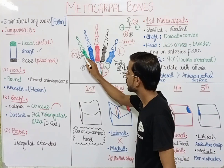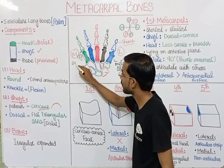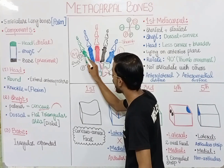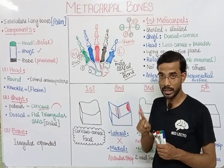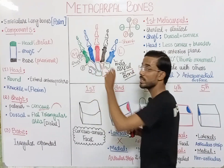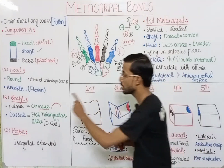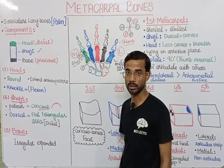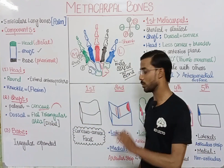At the distal part of the shaft you will see the triangular flat region, and overall at the dorsal side you will see the convex region. The base is the last part, and it is irregular in shape.